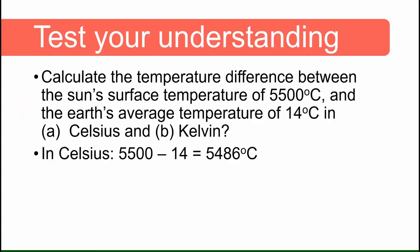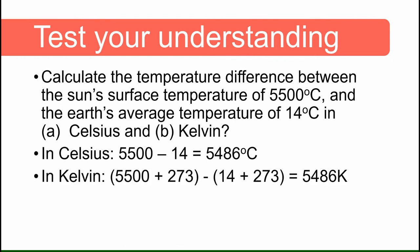For degrees Celsius we take 5,500 and subtract 14 from it and get 5,486 degrees Celsius. If we do the same for Kelvin and convert these two values to Kelvin first and subtract them from each other we get the same value of 5,486 Kelvin.